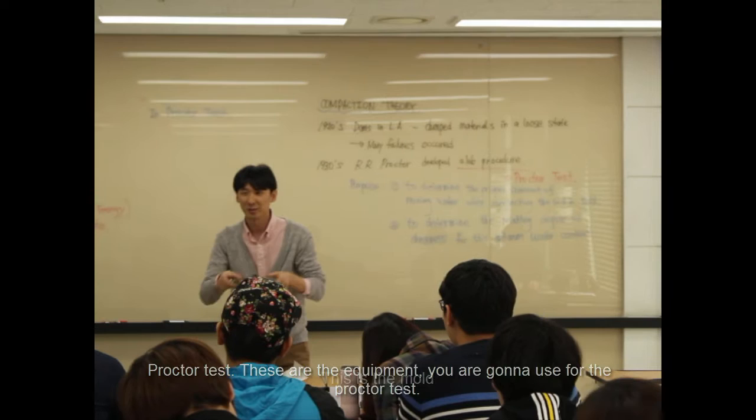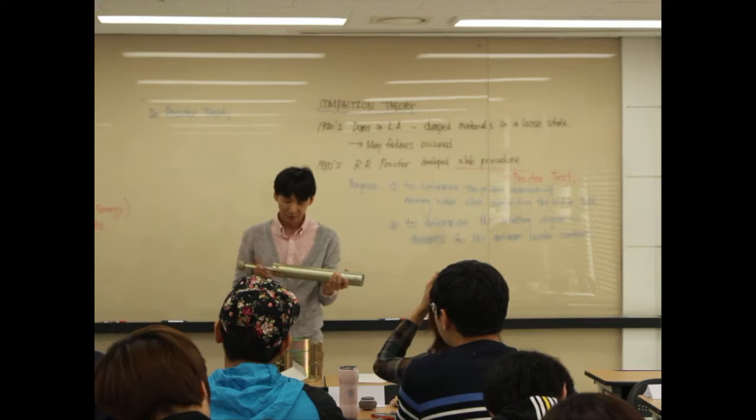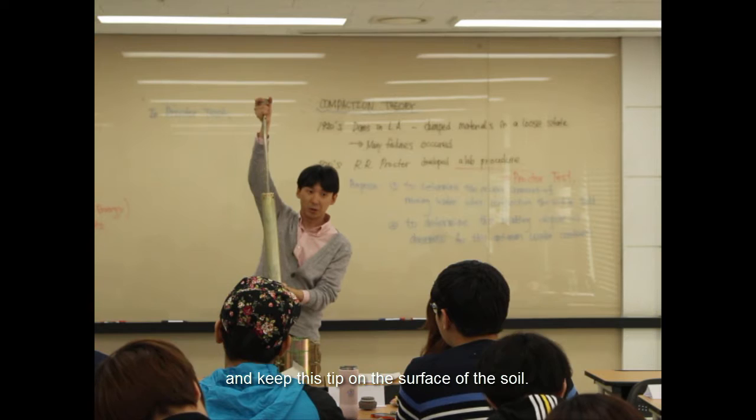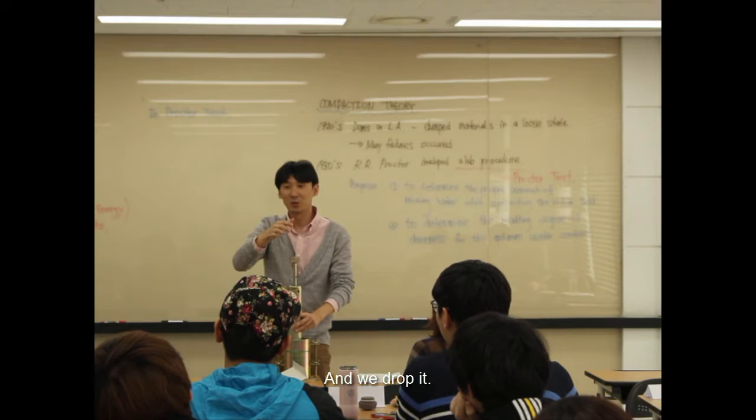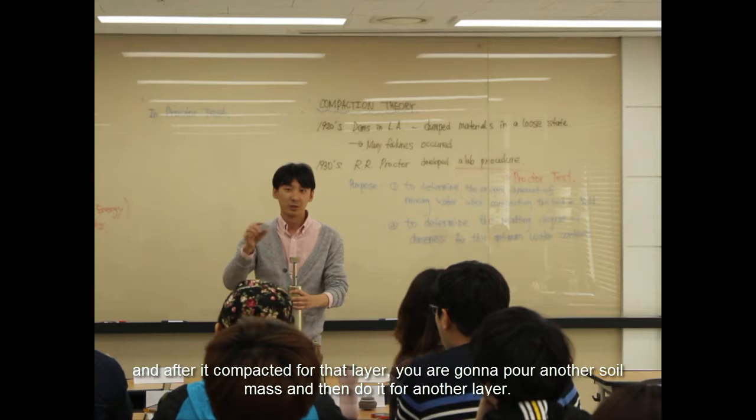Proctor test - these are the equipment that you're going to use. This is the mold, and this is the hammer. So you put the soil here, put this tip on the surface of the soil, and you drop it. You repeat this dropping the hammer for one layer, and once it's completed for that layer, you're going to put another soil mass and do it for another layer.